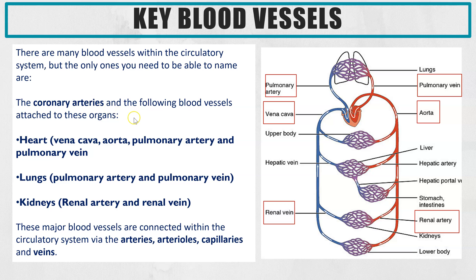The coronary arteries supply the heart's cardiac muscle with oxygenated blood so it can continually contract and relax, keeping the heart constantly beating. For the heart, you need to know the four major blood vessels that enter and exit: the two veins — the vena cava and the pulmonary vein — and the two arteries — the pulmonary artery and the aorta.